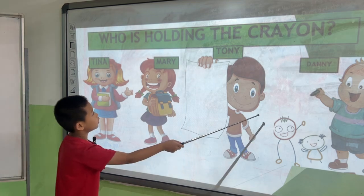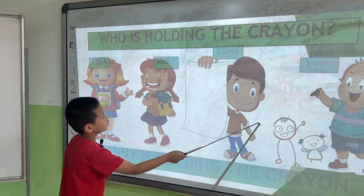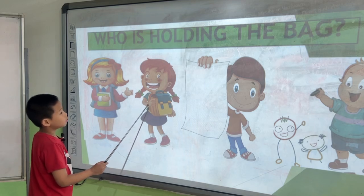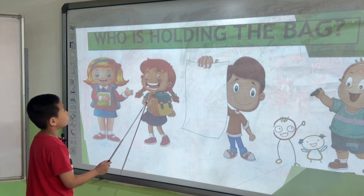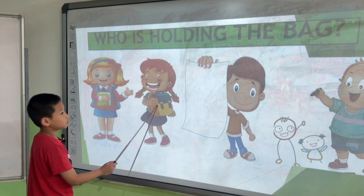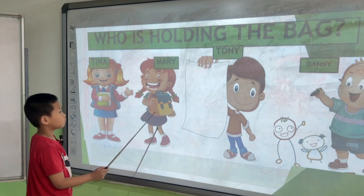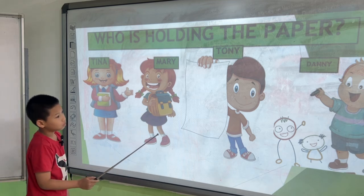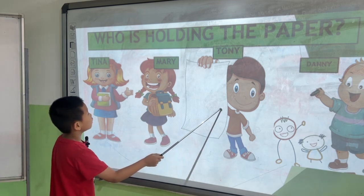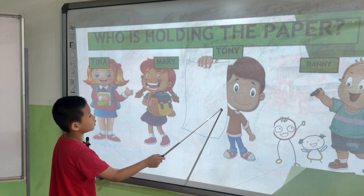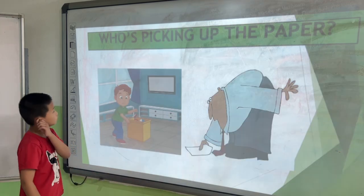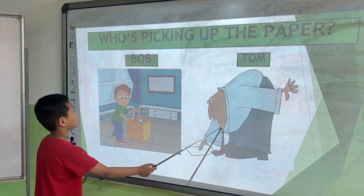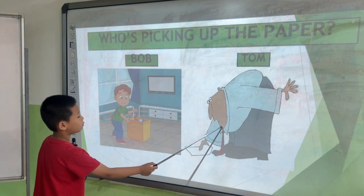Who is holding the crayon? Daddy is holding the crayon. Who is holding the bag? Barry is holding the pencil bag. Who is picking up the paper? The toy is holding the paper. Who is picking up the paper? Picking up the paper.